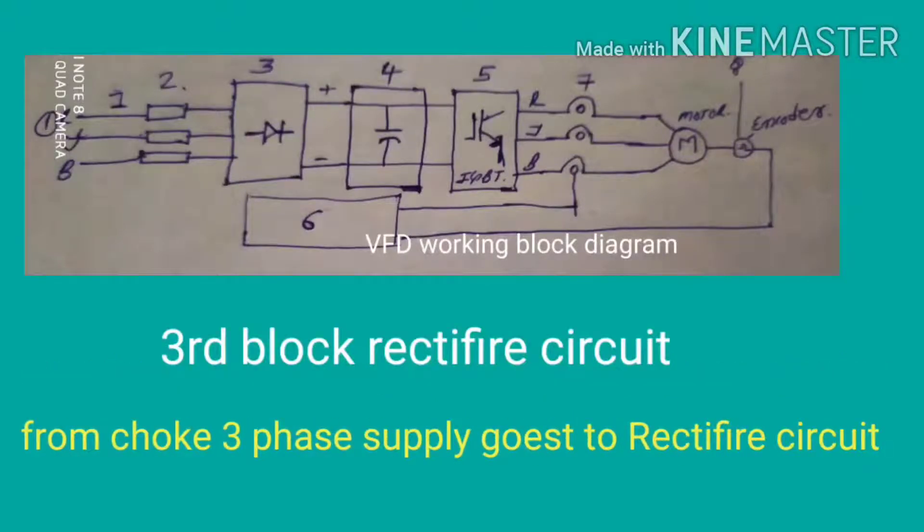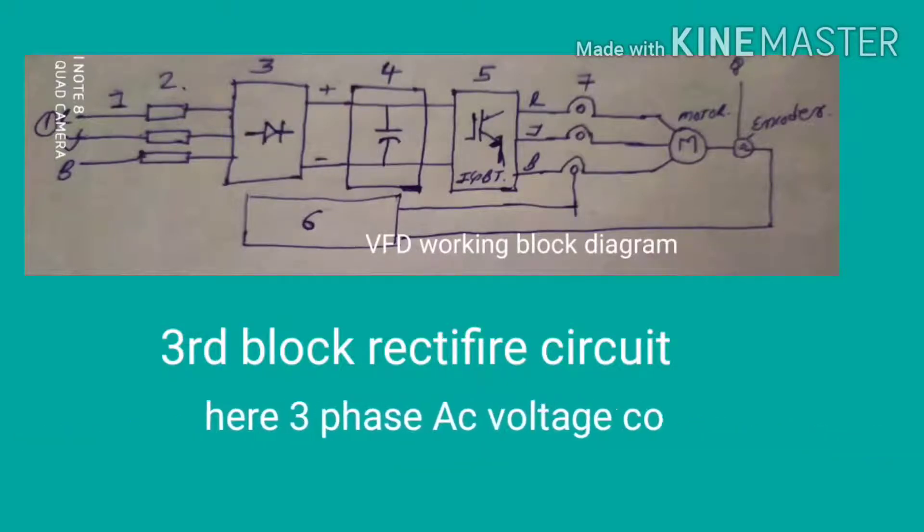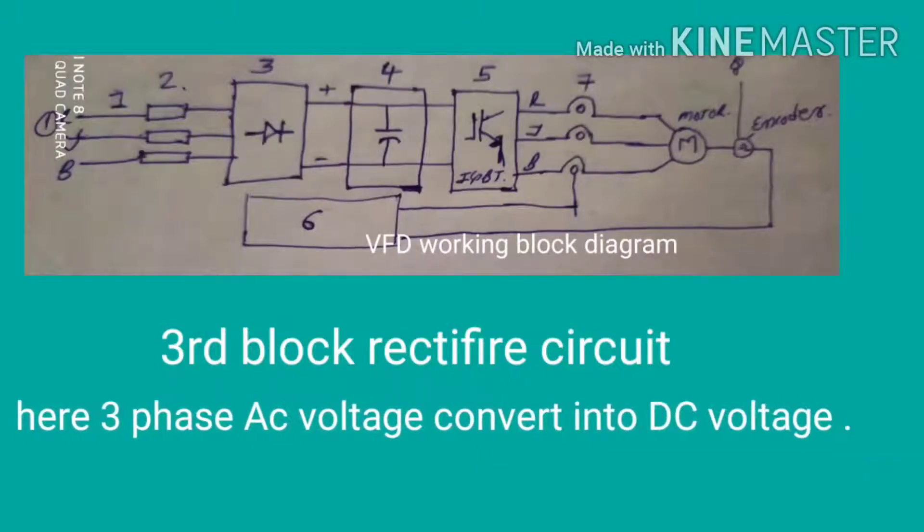Then the filter. The three-phase AC voltage are going to the third block: rectifier circuit. In the rectifier circuit, there is a total six number diode or thyristor or silicon controlled rectifier SCR installed.